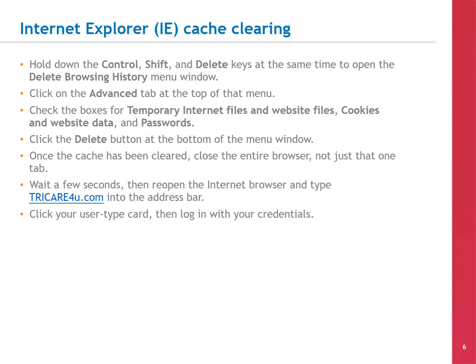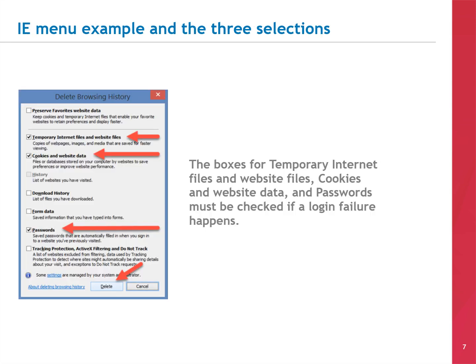Once the cache has been cleared, close the entire browser, not just that one tab. Wait a few seconds, then reopen the browser and type TRICARE4U.COM into the address bar. Click your User Type Card, then log in with your credentials. Here's what the DELETE BROWSING HISTORY menu looks like in Internet Explorer — you must check the boxes for Temporary Internet and Website Files, Cookies and Website Data, and Passwords, then click the DELETE button.